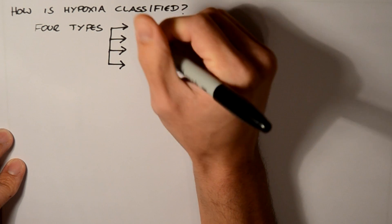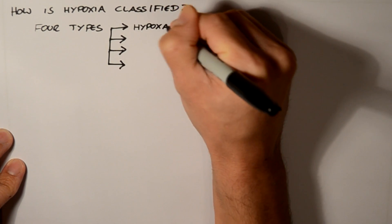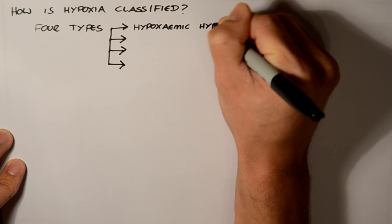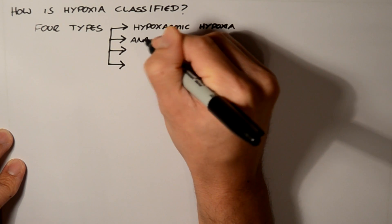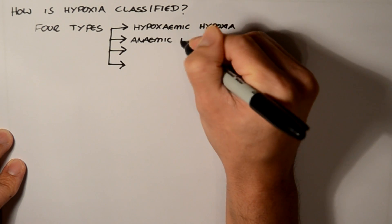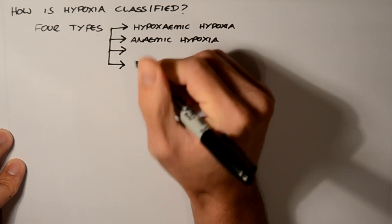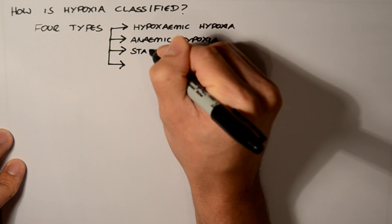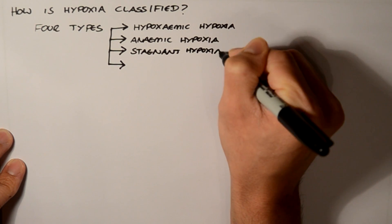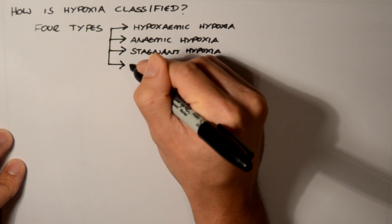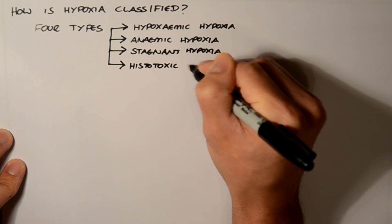Firstly, you've got hypoxemic hypoxia. Then anemic hypoxia. Then you've got stagnant hypoxia. And lastly, histotoxic hypoxia.